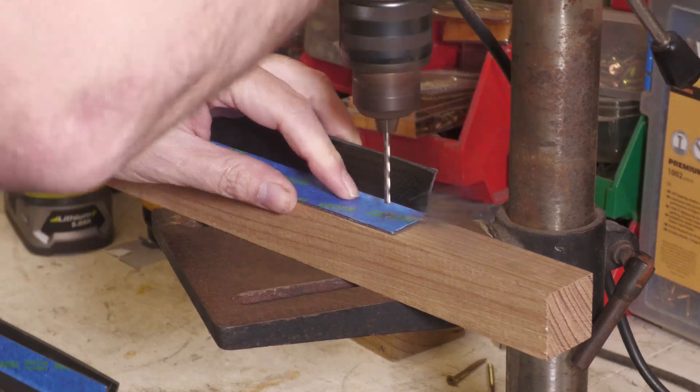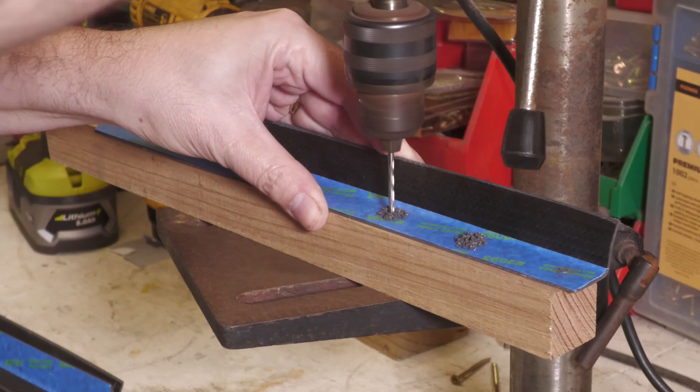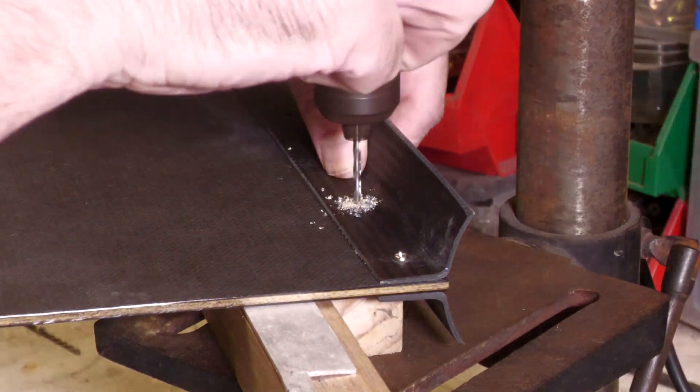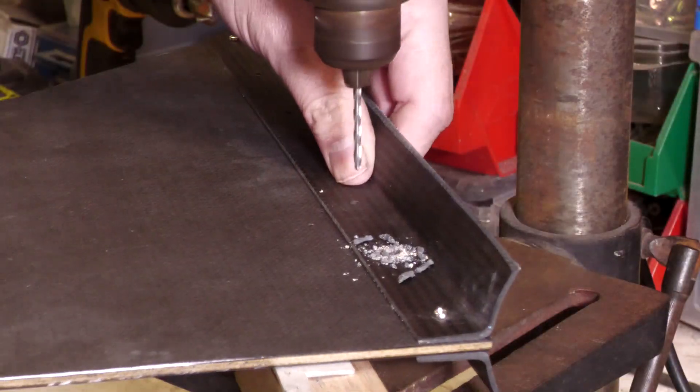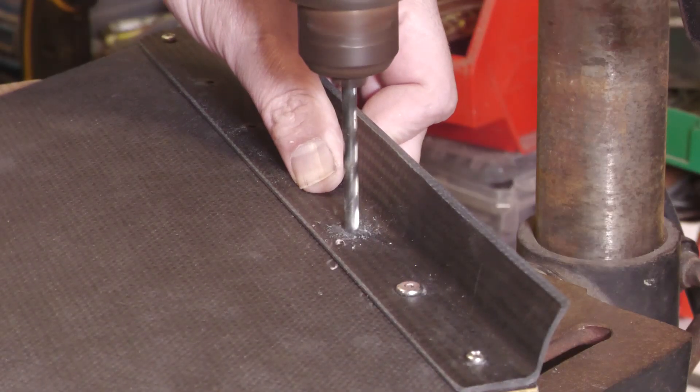We first drilled out only one side of the bracket. Then we assembled it with the fin and the other bracket and drilled out the rest of the holes. This made sure we had an exact and snug fit for all of the bolts.